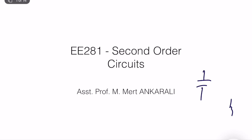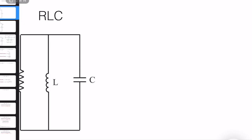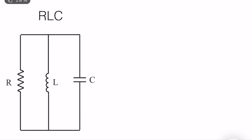In second-order circuits, we will have two energy storage elements. It can be two capacitors, two inductors — they should be independent — or one inductor and one capacitor. So let's analyze a simple RLC circuit which is a parallel circuit. We have a resistor, inductor, and capacitor.